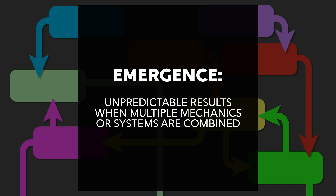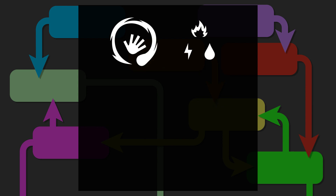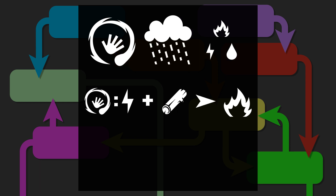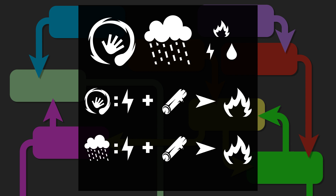Emergence is the phenomenon of unpredictable results when multiple mechanics or systems are combined. For example, say you have a magic system and an element system in your game, and you apply a certain set of rules that electricity spells will set wood on fire. However, as an emergent effect of this, lightning storms in your weather system may now also be able to set trees or wooden structures on fire as well — it wasn't something you were expecting, but because of the way these systems and elements interact, now this is happening as well.